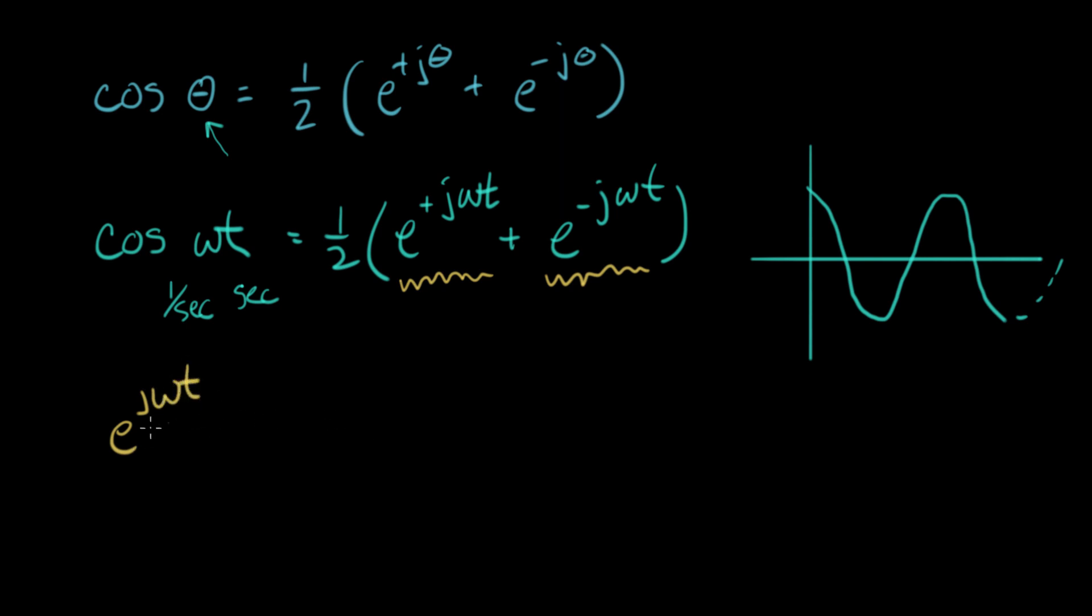What we just reviewed was that this is a complex number. Let's draw that complex number. We're going to put a number out here. We know it falls on the unit circle. So we know its angle is whatever is multiplying the j up in this exponent.